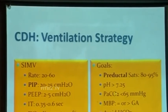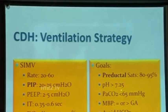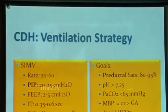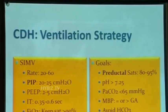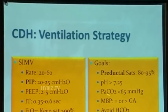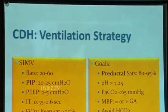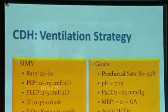Try to keep pH 7.25 and above, and CO2 up to 65. Whereas in PPHN you want normal CO2, here you don't need to shoot for it. If you get normal CO2 with this ventilator strategy, that's good; if you can't, accept up to 65. Maintain blood pressure adequate for age.